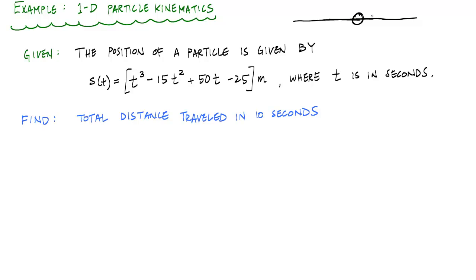In this case, in a lot of problems, the position of a particle is given by some sort of mathematical relationship. In this case, a polynomial in units of meters where t is in seconds. This given relationship will output the units of meters. What we'd like to find in this problem is the total distance traveled in 10 seconds.